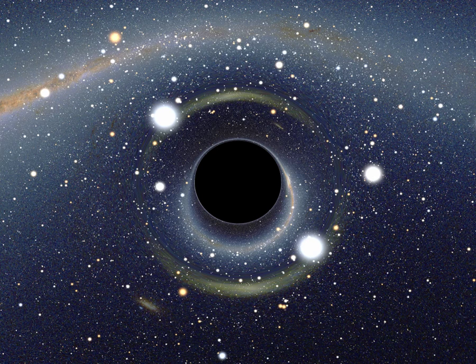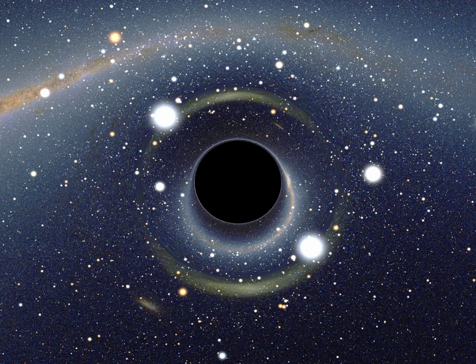A Q star, also known as a gray hole, is a hypothetical type of compact, heavy neutron star with an exotic state of matter. The Q stands for a conserved particle number. A Q star may be mistaken for a stellar black hole.